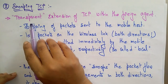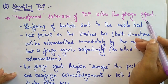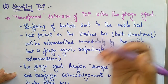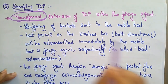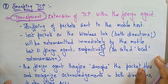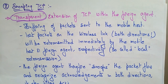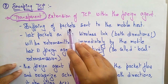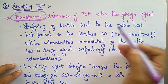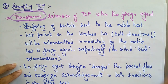In Snooping TCP, the key concept is a transparent extension of TCP within the foreign agent. So everything that we use in the indirect TCP is the same, but the only difference in snooping is that a transparent extension of TCP within the foreign agent is established. Let's see what that means — it involves the buffering of packets sent to the mobile host.